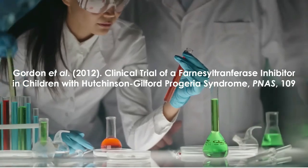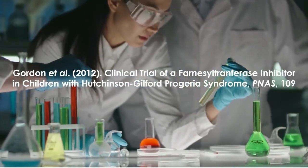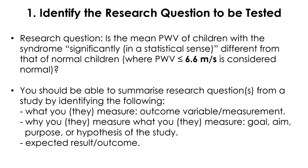As part of the ongoing effort, a clinical study in 2012 examined the effect of treatment with a drug called Lonafarnib on a number of physiological outcomes. The researchers measured the pulse wave velocity (PWV) of 18 children diagnosed with the syndrome. PWV is often used as a measure of vascular stiffness, an important factor in cardiovascular health, and it is known that this outcome measure is abnormally high in children with the syndrome. In normal children, the average PWV is about 6.6 meters per second or less. One of the research questions can be: is PWV of children with progeria different from that of normal children?